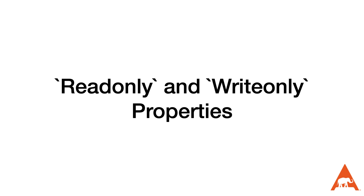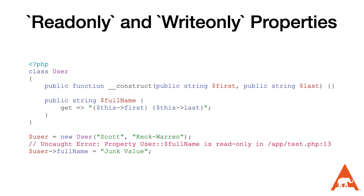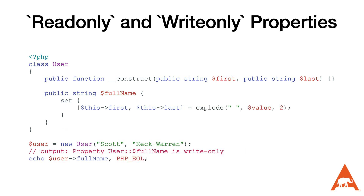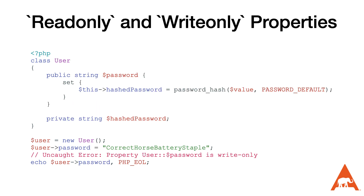One of the interesting features of property hooks is that we don't need to define both the get and the set operations, so we can create some interesting behaviors. If we define just the get property, we'll create a read-only property, and if we try to write to it we'll get an error message.